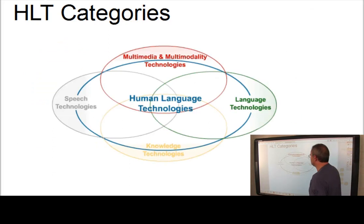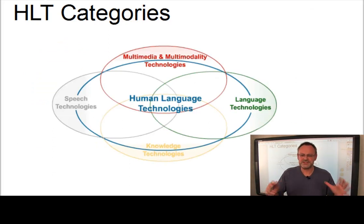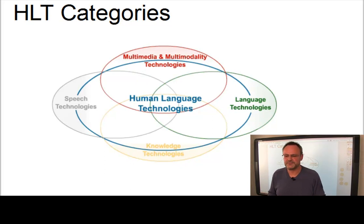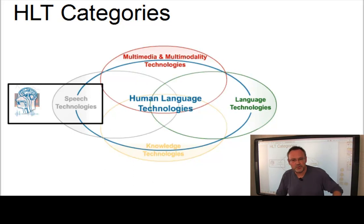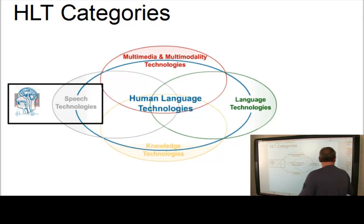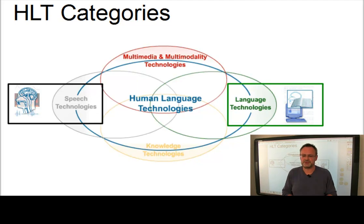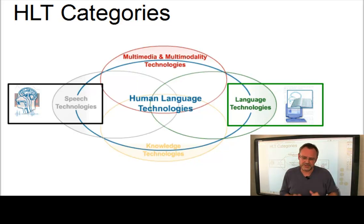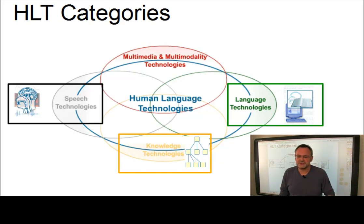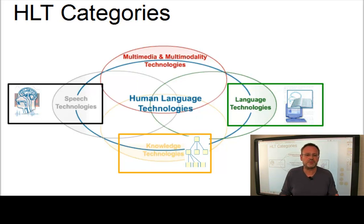Let's look at the categories of human language technology. The set of human language technologies can be subdivided into the following overlapping and interacting categories. Speech technologies process or produce spoken language, giving machines ears and a mouth to speak. Language technologies process or produce written language. This includes both low-level techniques for text preprocessing and text production and higher-level techniques for understanding and generation of linguistic content. Knowledge technologies are concerned with the acquisition, representation and utilization of non-linguistic knowledge about concepts and tasks in the real world by computer programs in order to solve problems in some application domain.